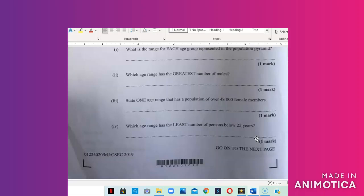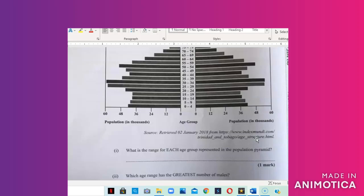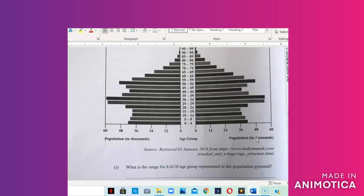Part four asks which age range has the least number of persons below 25 years. So which age range has the least amount of persons below age 25? So where you have 25 to 29, which age range has the smallest? You have to look on both sides now. The 15 to 19 bracket has the smallest bars both for male and female. So it therefore means that the 15 to 19 bracket or range has the smallest persons below age 25.